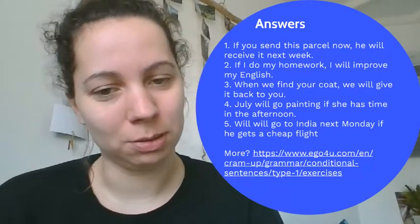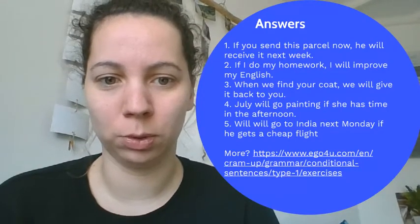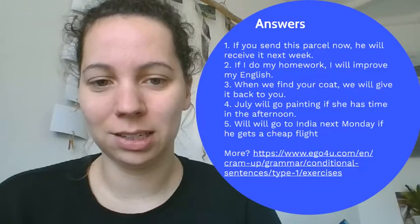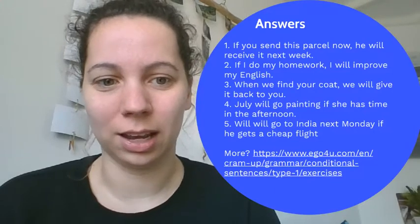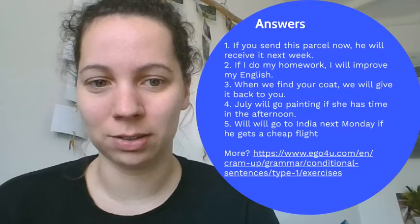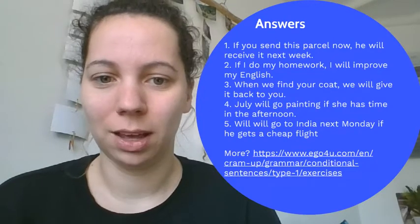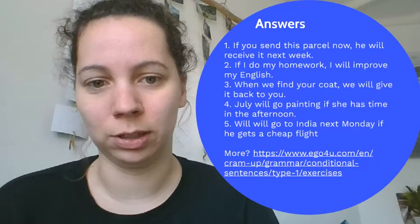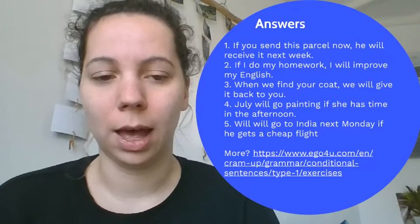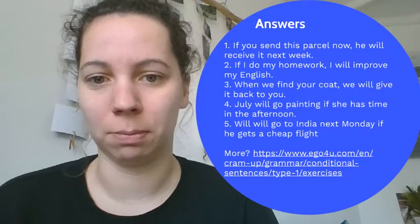Sentence three: I see the word 'when,' so again condition first, then consequence. Present simple: 'when we find your coat,' then will plus verb: 'we will give it back to you.' Sentence four is reversed — consequence comes first, then condition. I can tell because 'if' appears in the second part. So the first part gets 'will' plus verb: 'will go,' and after the 'if' I use present simple: 'if she has time.'